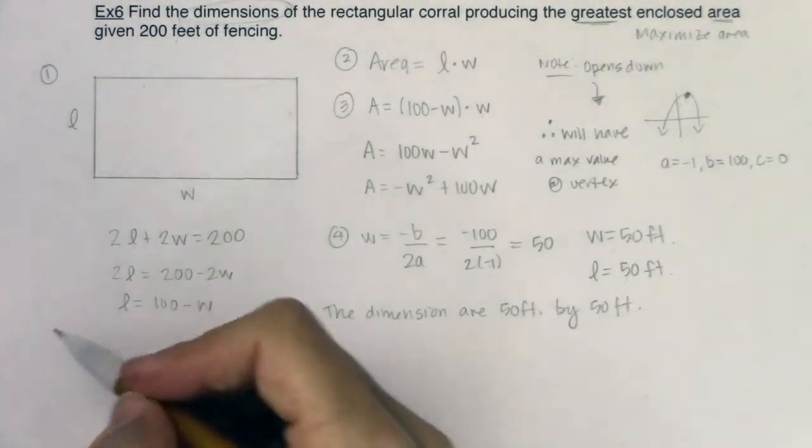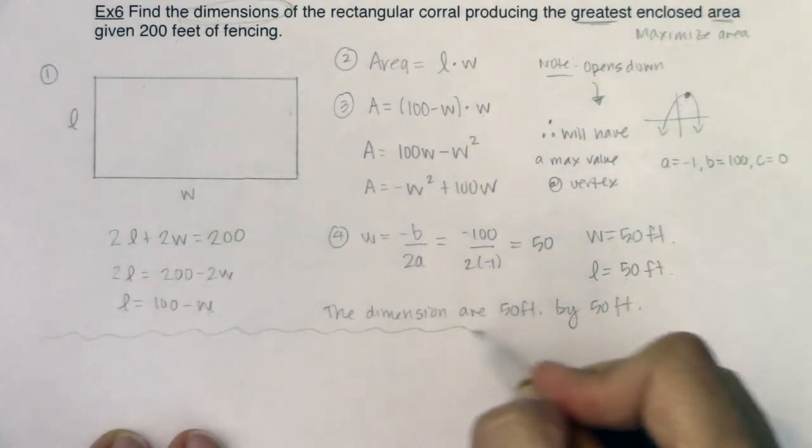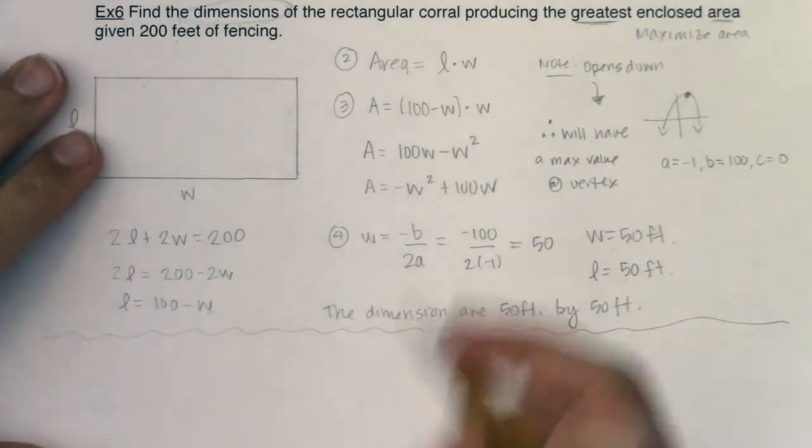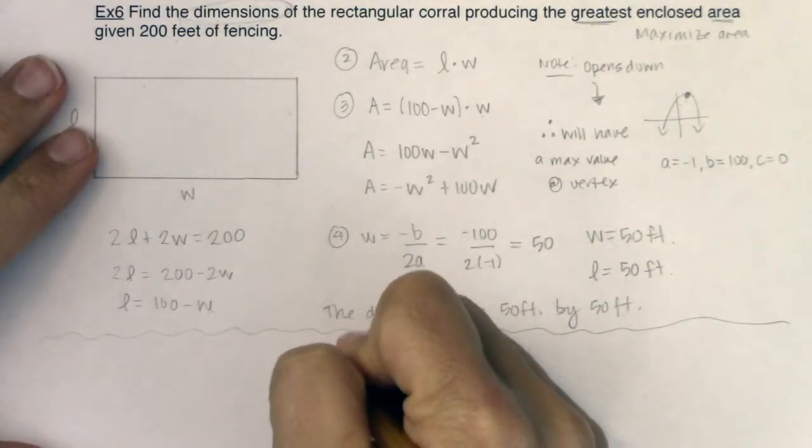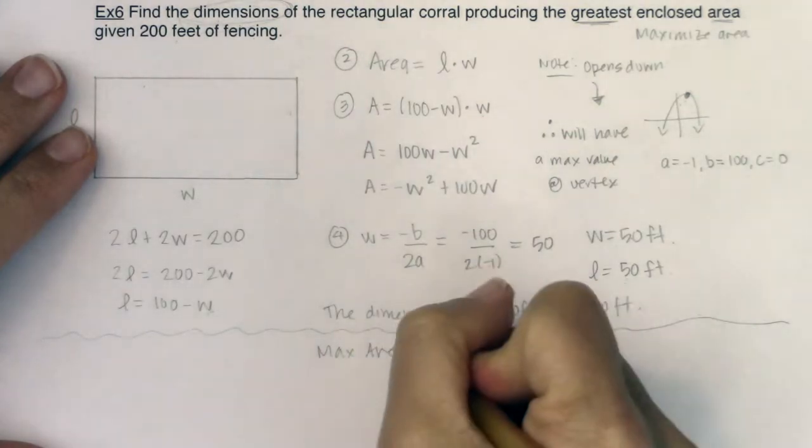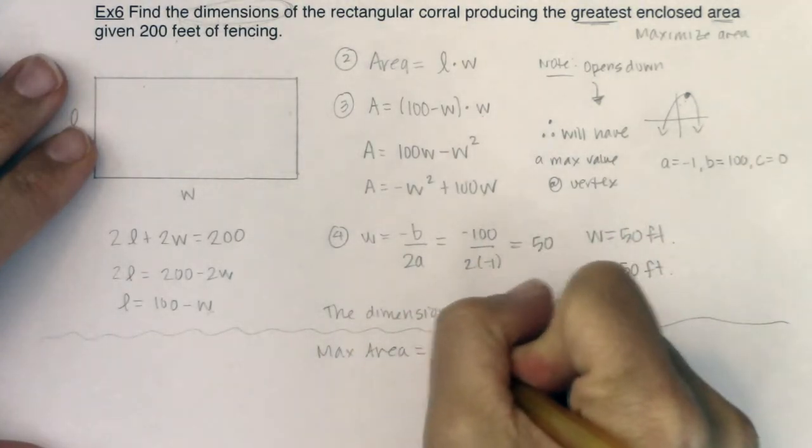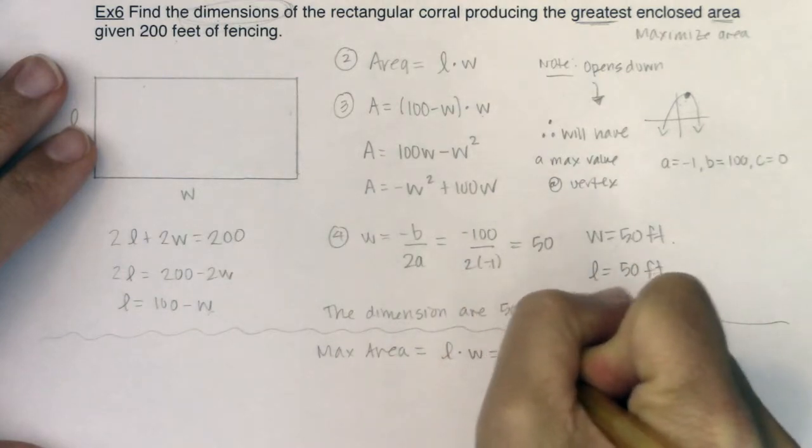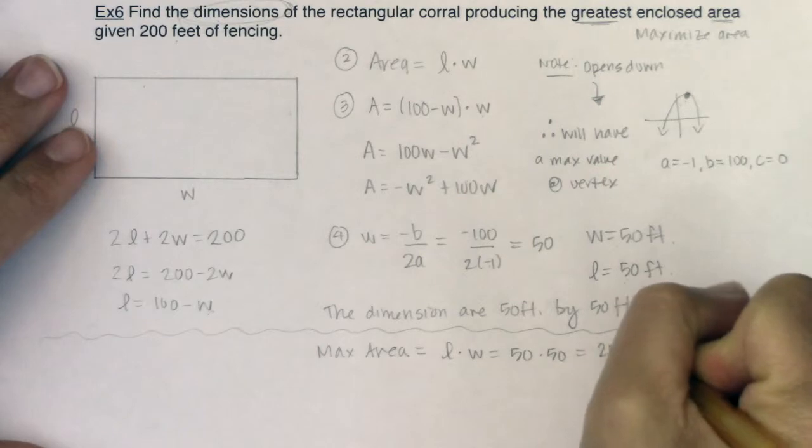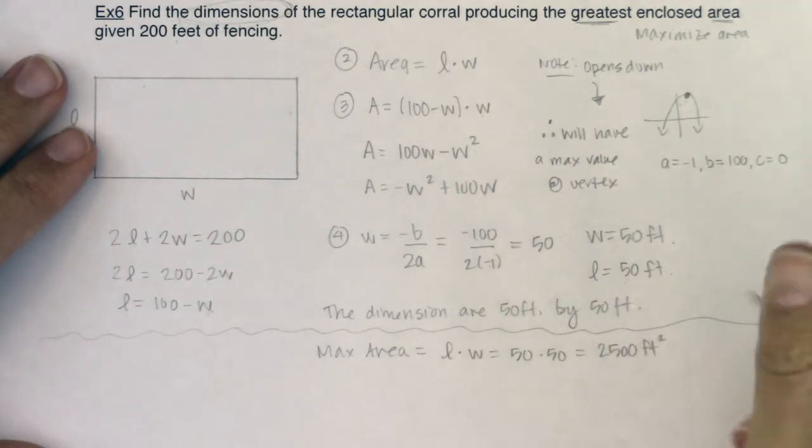Just for the sake of extending this problem, I'm going to put a separation squiggle here because I'm not asking you to actually do this. But if you had asked for the maximum area, if you had actually wanted that quantity, you could have taken length times width. We could have said it was 50 times 50, which would have been 2,500 square feet.